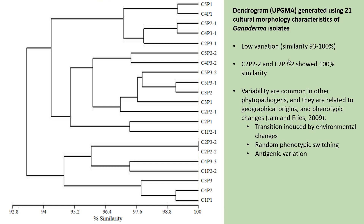Variability is common in other phytopathogens and is related to geographical origin and phenotypic changes. These phenotypic changes can be due to transition induced by environmental changes, random phenotypic switching, and antigenic variation.